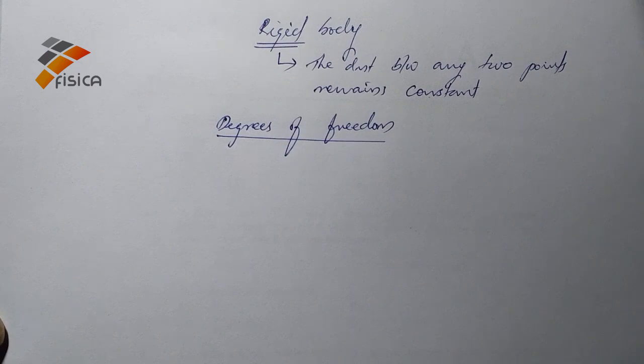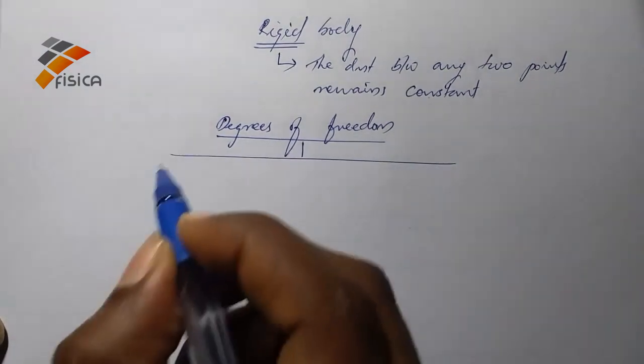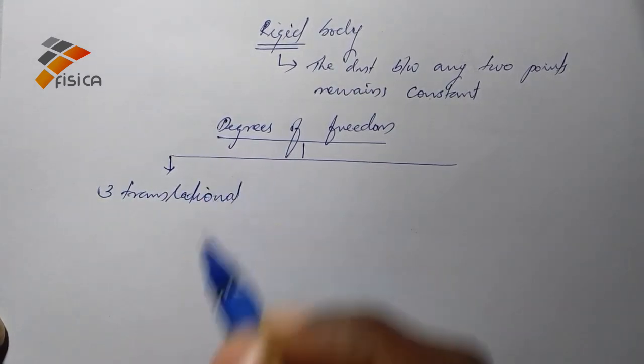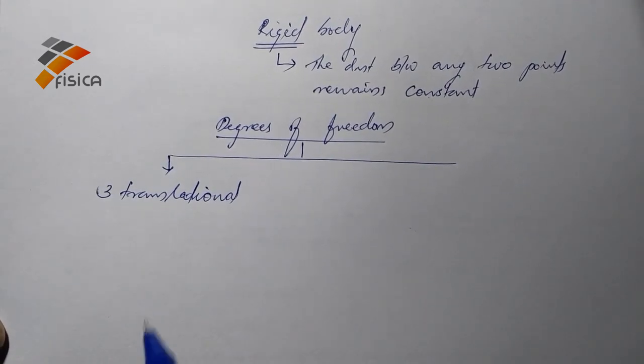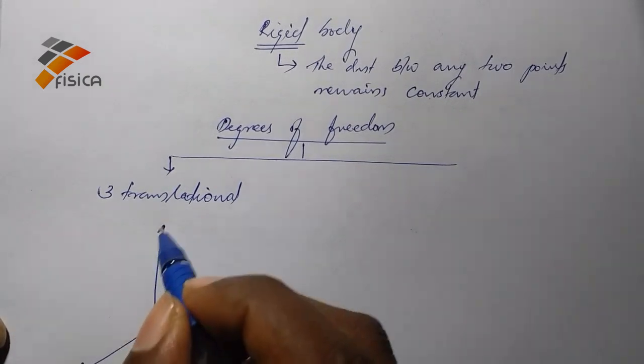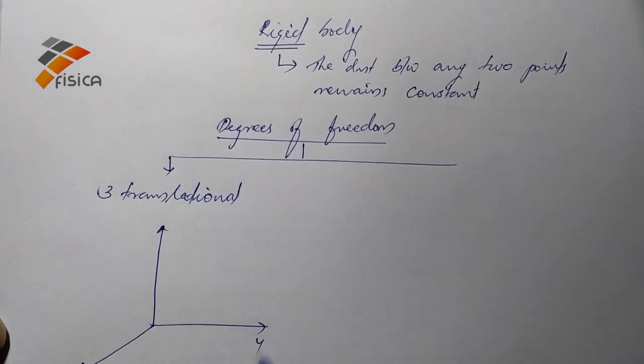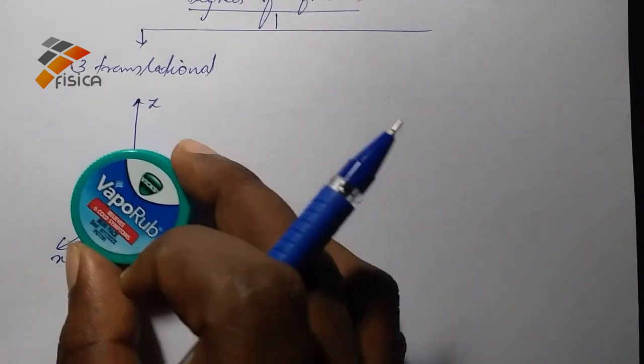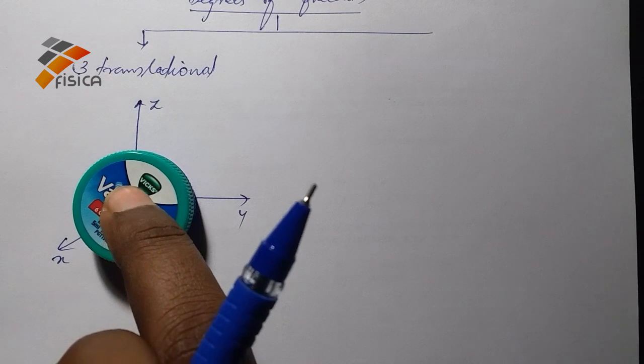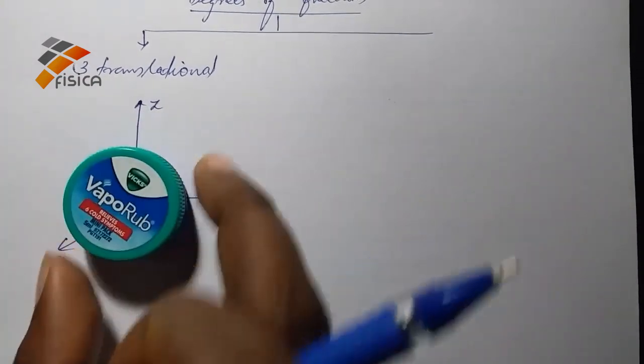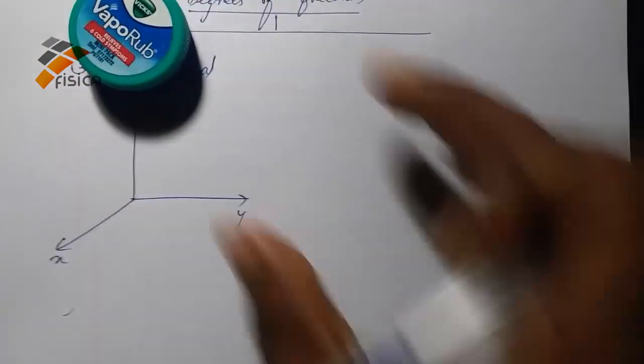The degrees of freedom of a rigid body: there are three translational degrees of freedom. These three translational degrees of freedom are due to the translation along x-axis, y-axis, and z-axis. For a rigid body, suppose this is a rigid body, it can move along x-axis, it can move along y-axis, and it can move along z-axis. So these are the three degrees of translational freedom.